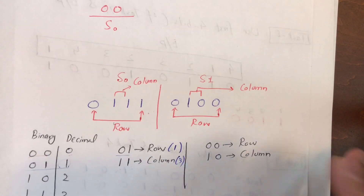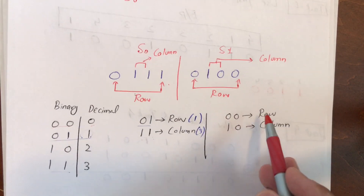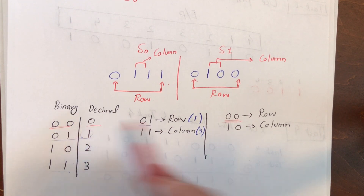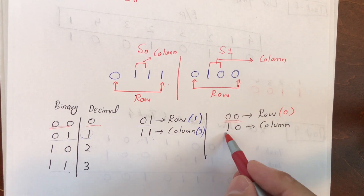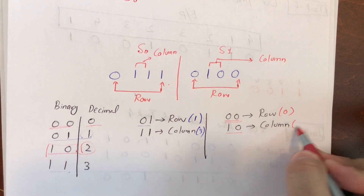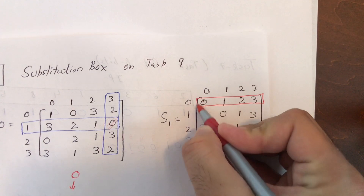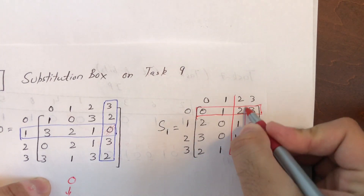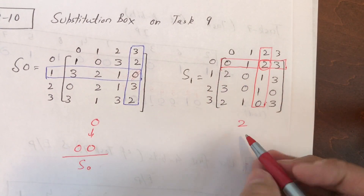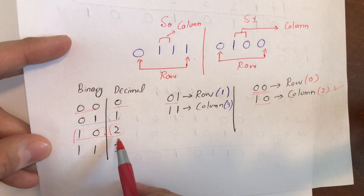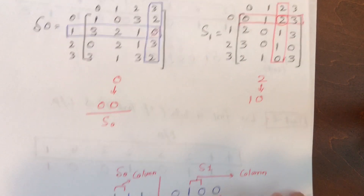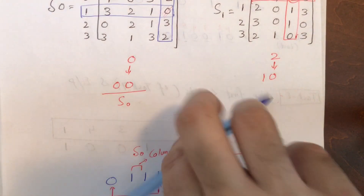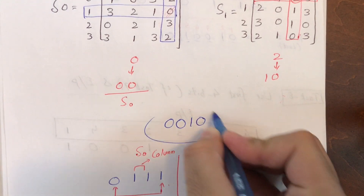For S1: similarly, find the row and column from the right-side bits. The result from S1 is column number 2. The overlapping value is 2 in decimal. Converting decimal 2 to binary gives 1 0. So the final cipher text combining S0 and S1 outputs is: 0 0 1 0. That is the final cipher text.